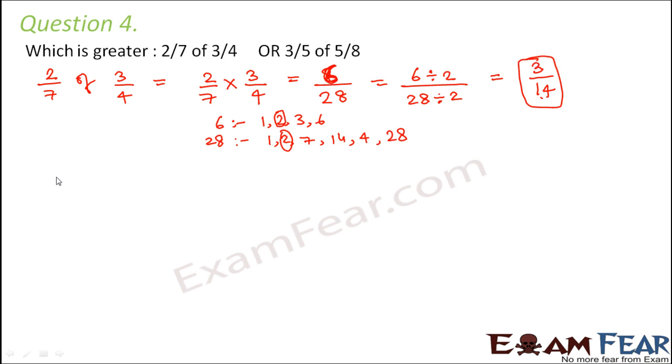The other fraction that needs to be compared is 3 by 5 of 5 by 8, which is equal to 3 by 5 into 5 by 8. So this is equal to 15 by 40.